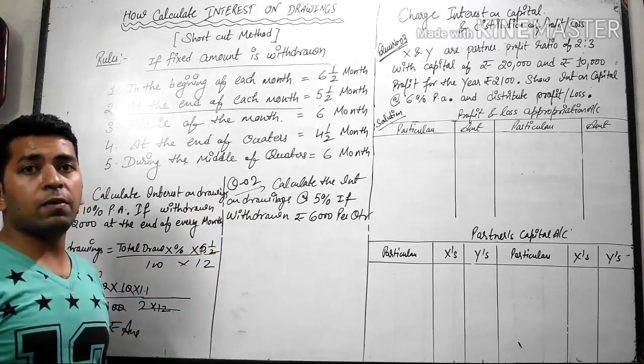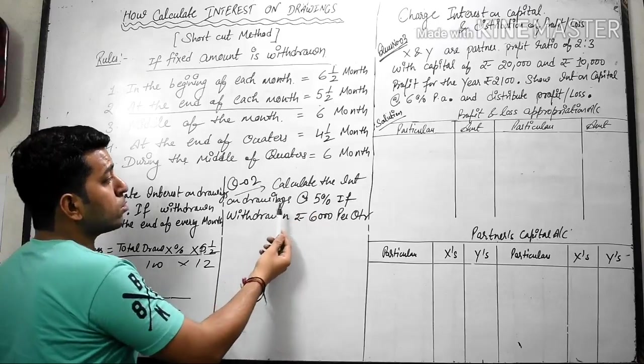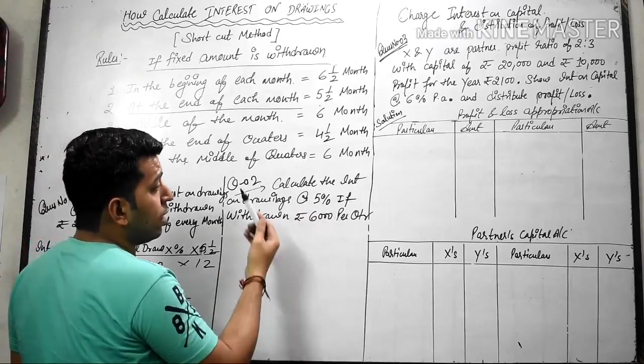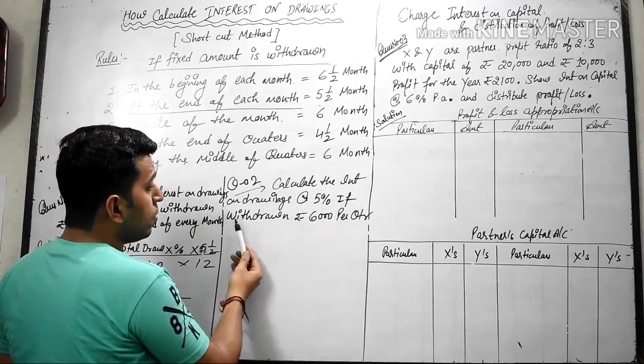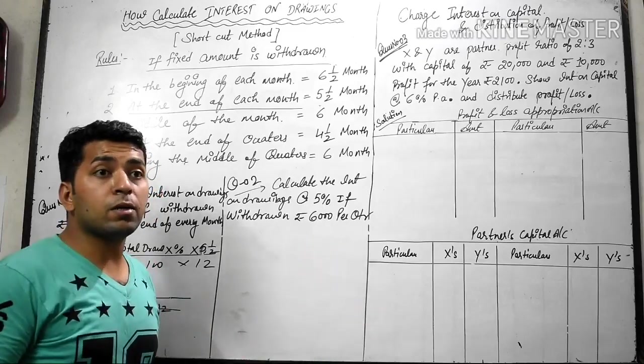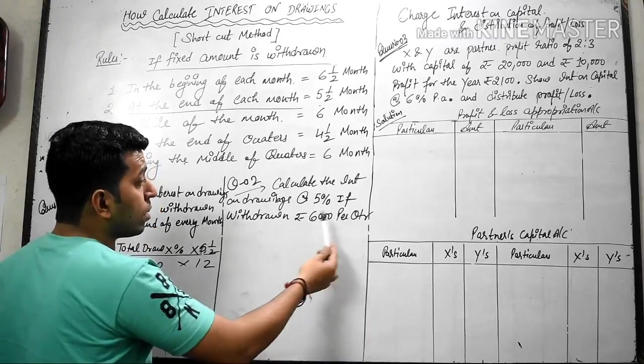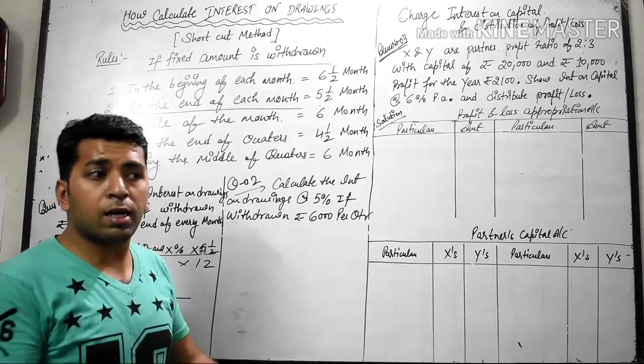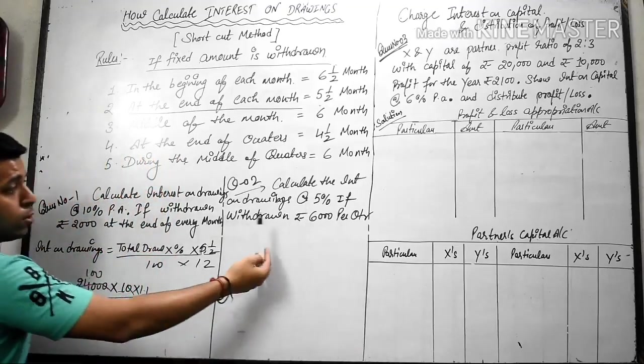Second question we have: calculate the interest on drawings at the rate 5% per annum if withdrawing rupees 6,000 per quarter. Here you can say that the quarter will be withdrawn at the middle.